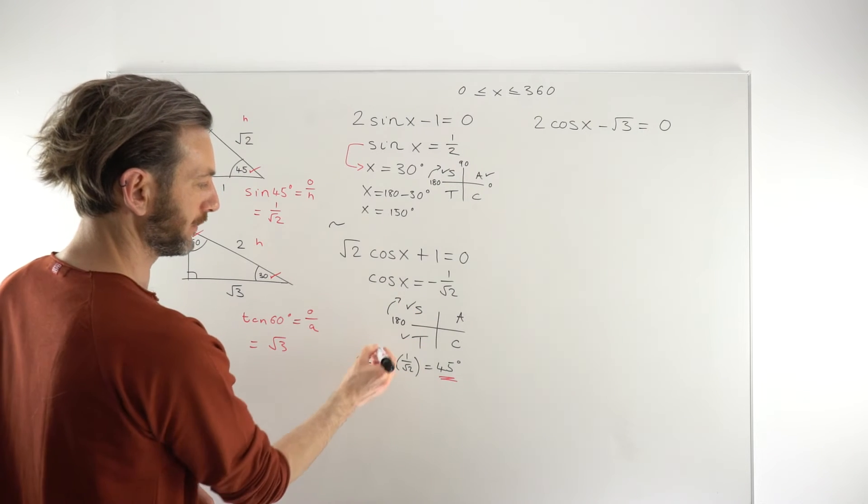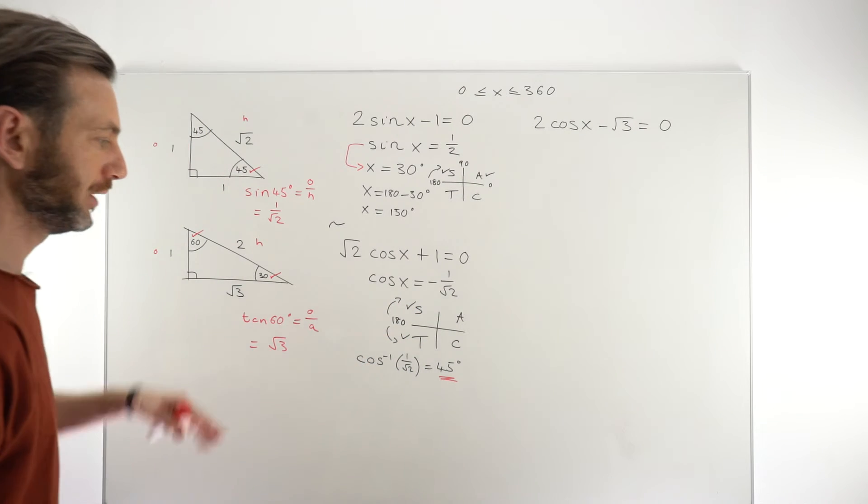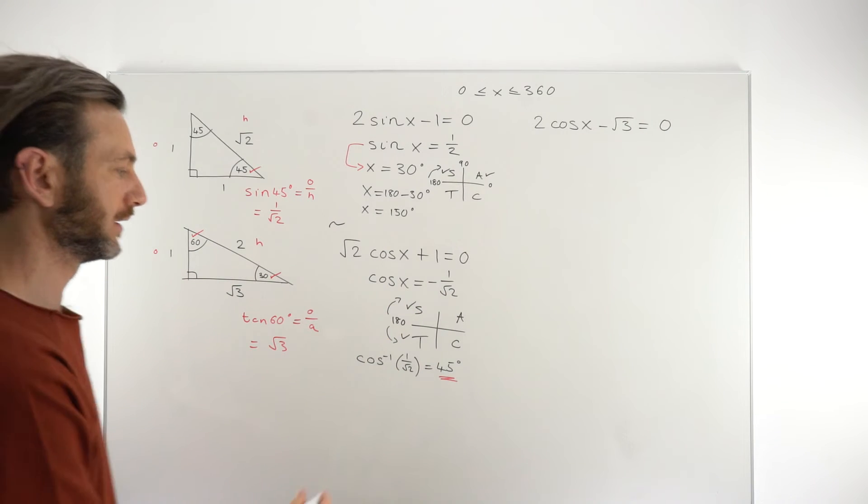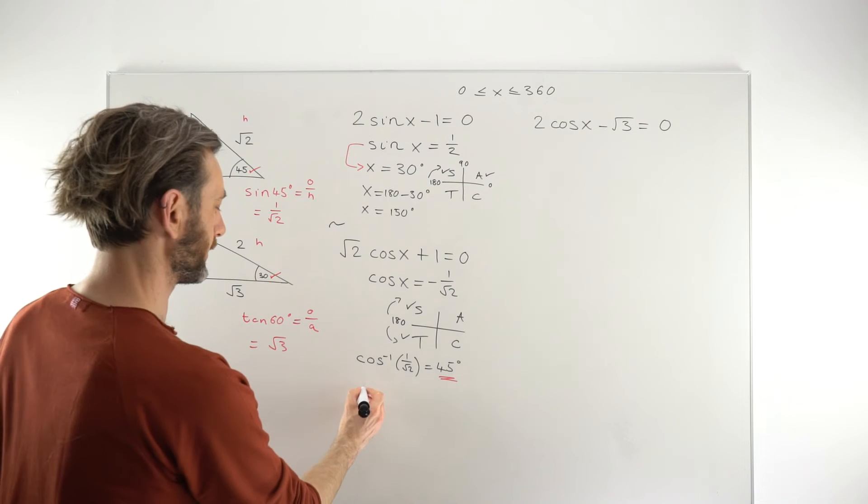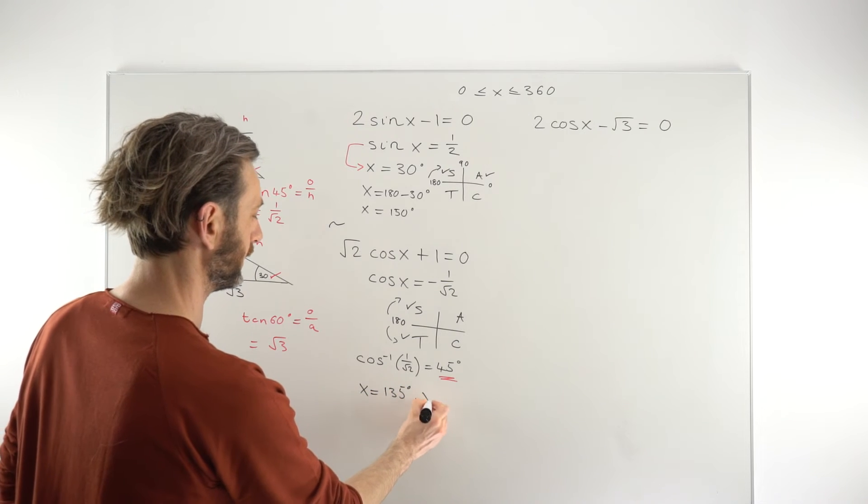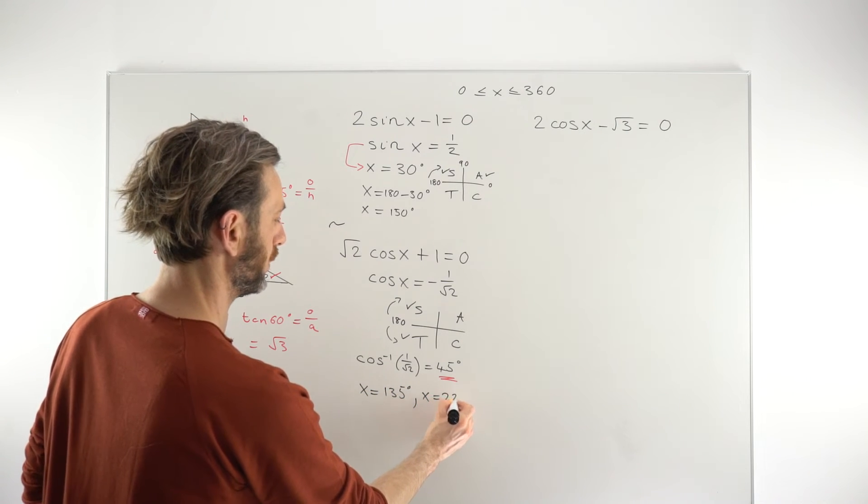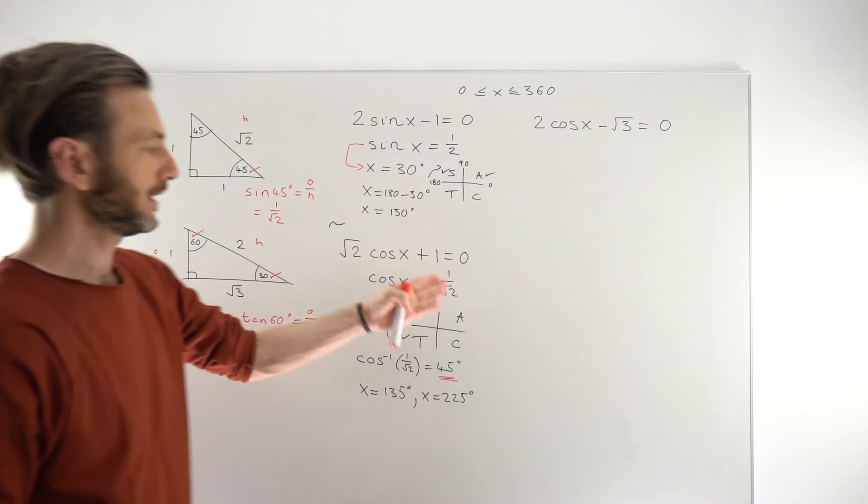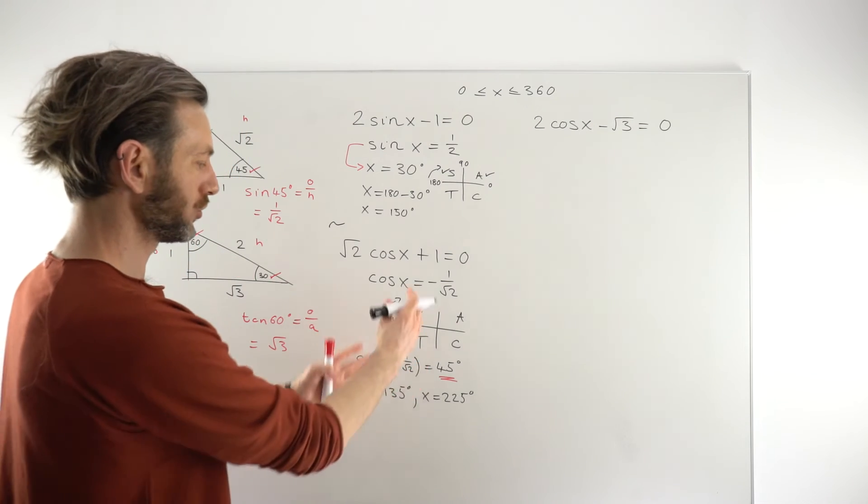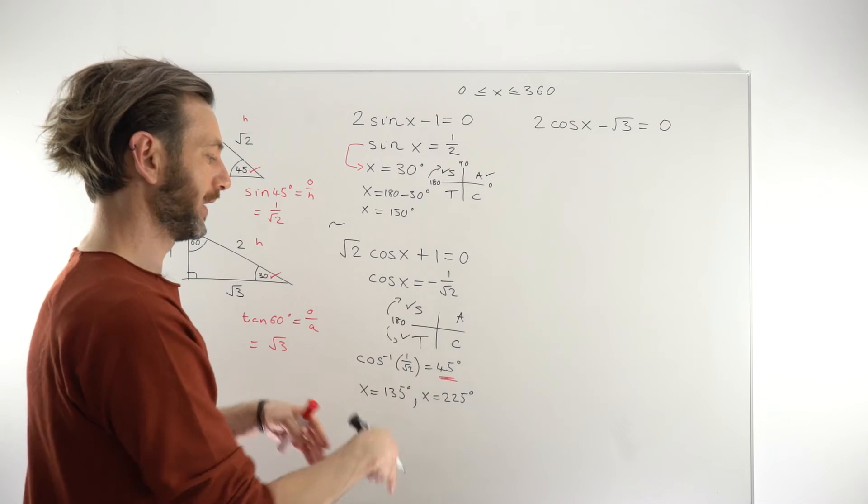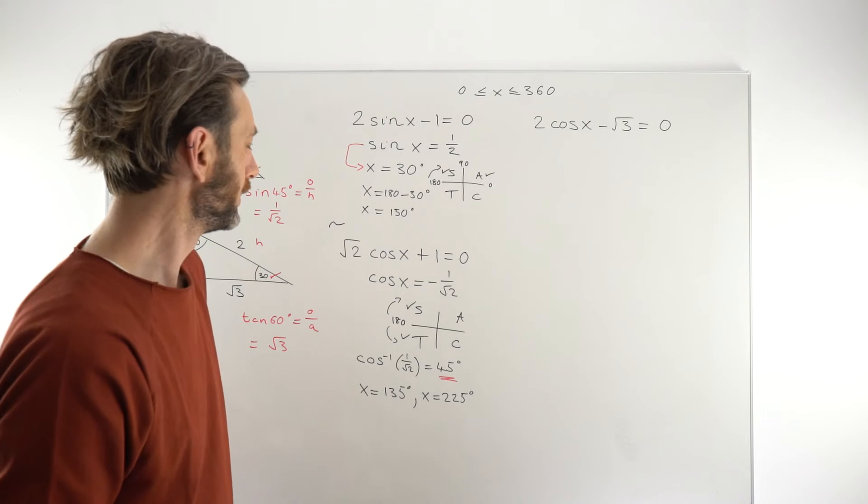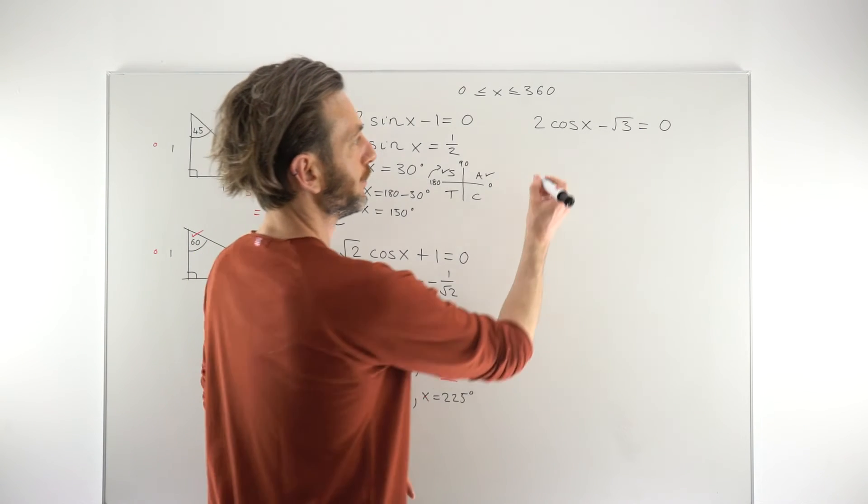But, we just need to make an adjustment now from 180 to get the solutions. So, 180 minus 45 to go that way. And, 180 plus 45, because it's going counterclockwise, to go that way into the T quadrant. And, that's going to give us two solutions of x equals 135 degrees and x equals 225 degrees. So, slightly more complicated. Trig equations are always more complicated when there's a negative. You've got one or two extra lines, either of working or at least one or two extra things to consider. Right, let's move on to the last one.